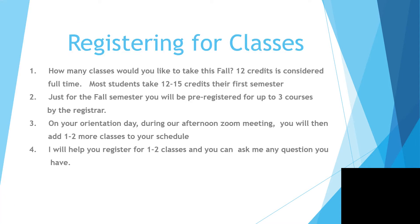So, registering for classes. How many classes would you like to take this fall? On average, students take between 12 and 15 credits, which means about four or five classes. Just for the fall semester, you will be pre-registered for up to three courses by the registrar. On your orientation day during our afternoon Zoom meeting, you will then add one to two more classes to your schedule. I will help you register for these classes and you can ask me any questions you have about them.